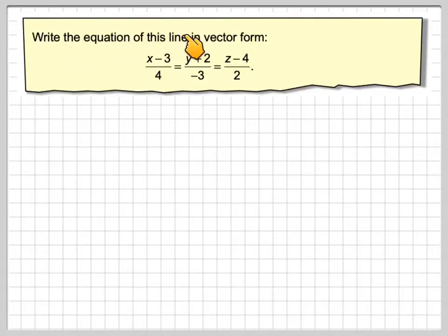Write the equation of this line in vector form. So here we have the Cartesian equation: x minus 3 over 4 is equal to y plus 2 over minus 3, equals z minus 4 over 2.